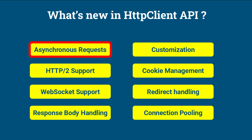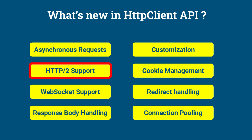Asynchronous Requests: The HTTP Client API supports asynchronous HTTP requests using the sendAsync method, which returns a CompletableFuture of HTTPResponse. HTTP/2 Support: The HTTP Client API supports HTTP/2 out of the box, providing better performance compared to HTTP 1.1.